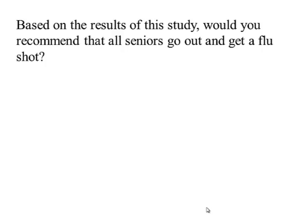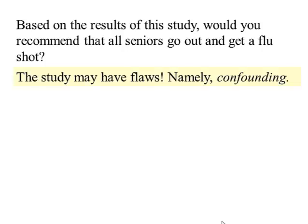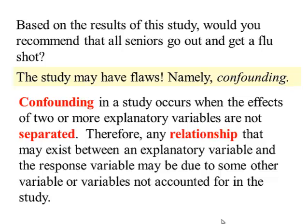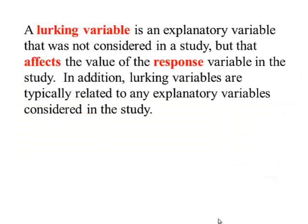Based on the results, would you recommend all seniors get the flu shot? The answer is no, because the study may have flaws — namely, confounding. Confounding occurs when the effects of two or more explanatory variables are not separated. Any relationship between the explanatory and response variable may be due to other variables not accounted for in the study. The flu example is an observational study with confounding. A lurking variable is an explanatory variable not considered in the study that still affects the response variable, and it is typically related to the explanatory variables in the study.